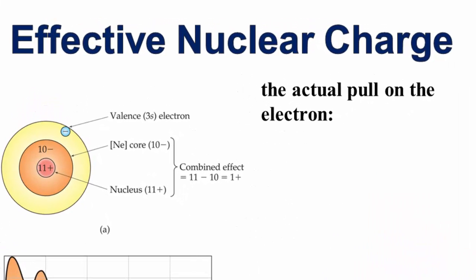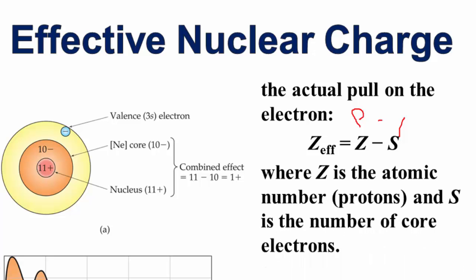Effective nuclear charge is the actual pull on the electron. The proton in the nucleus is positive, the electron is negative, and the electron is pulled by that proton in the nucleus. We express that with the formula: Z effective — the actual pull on the electron — equals Z minus S. Z is the atomic number, the number of protons, and S is the number of shielding or core electrons.